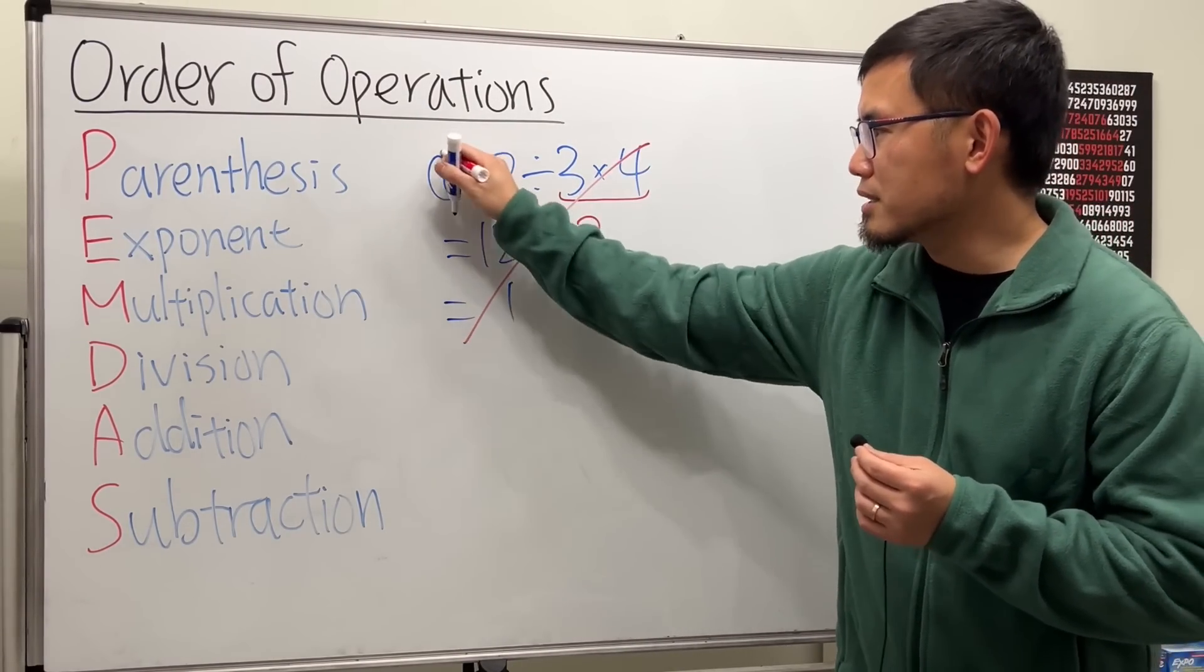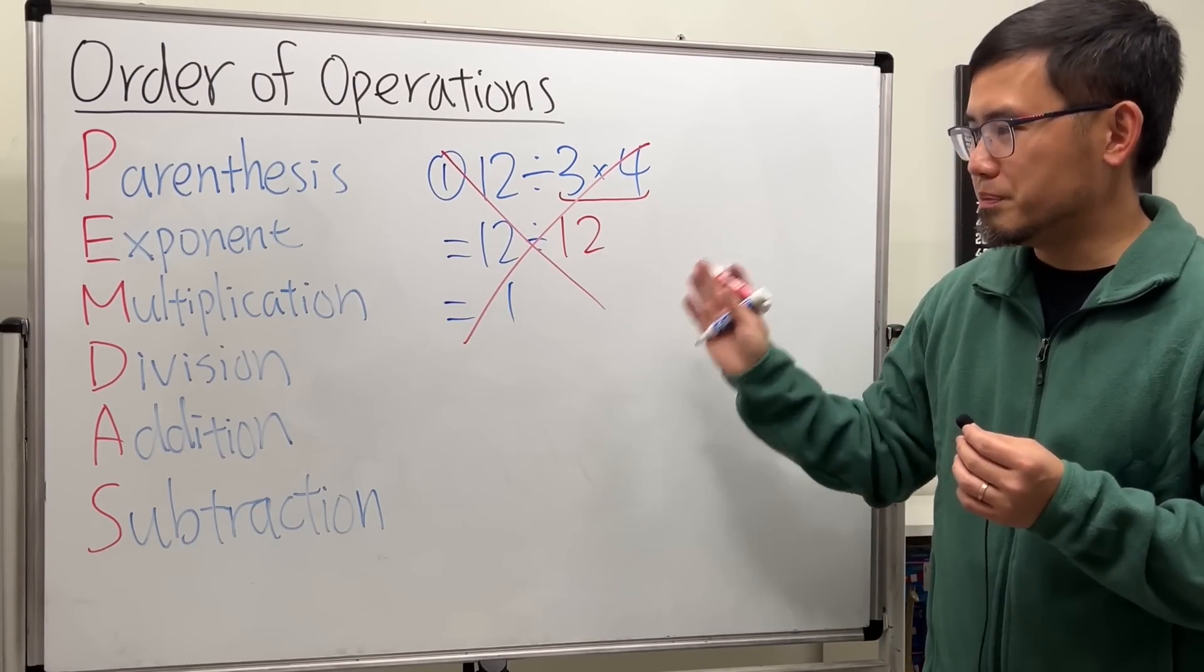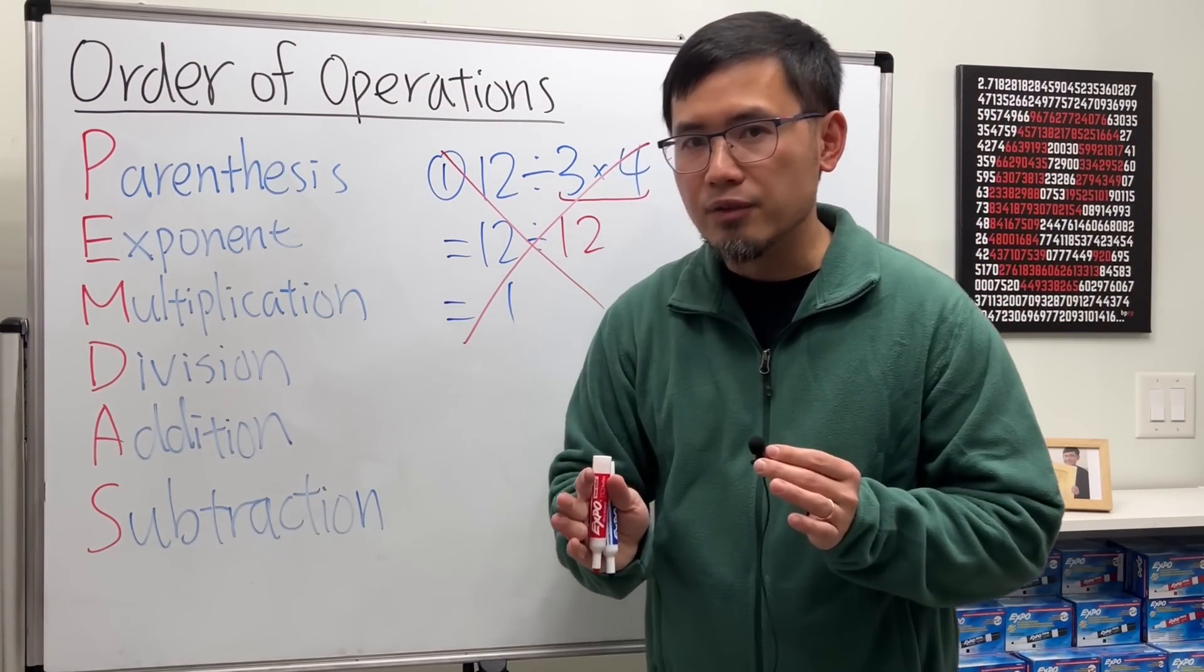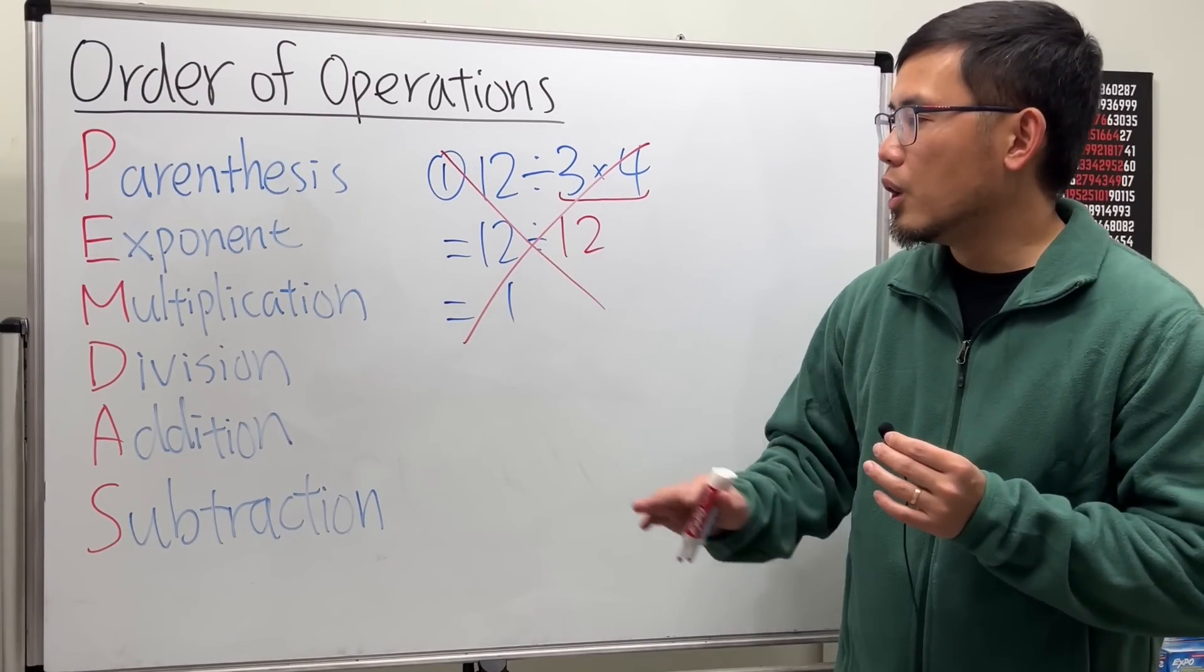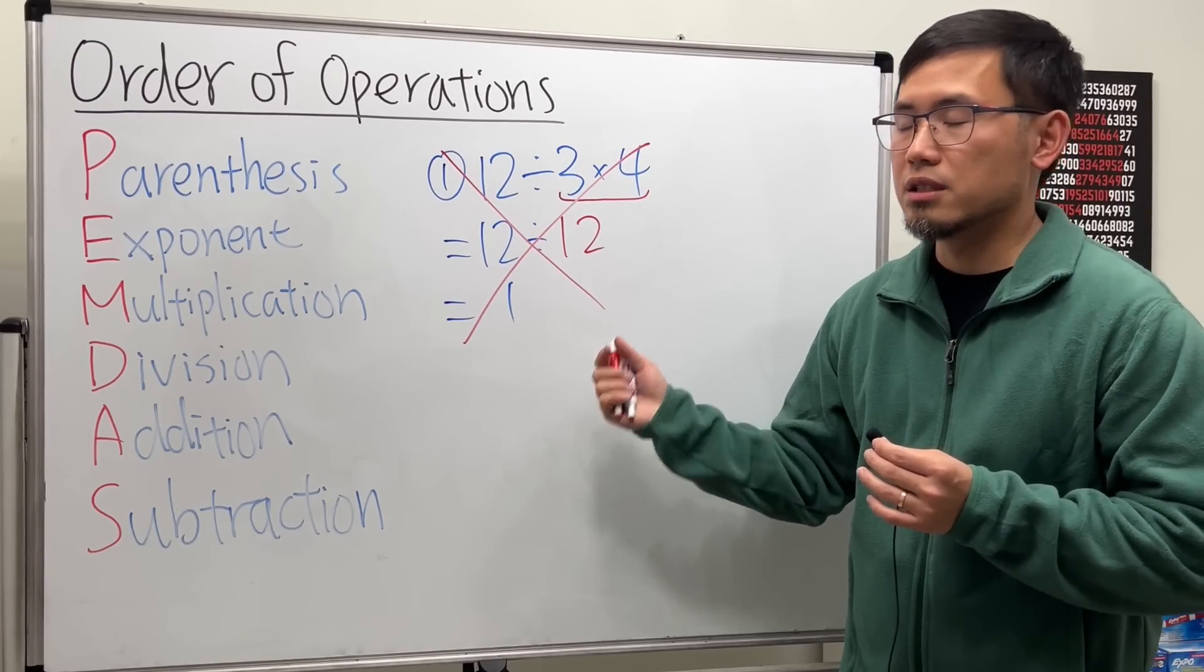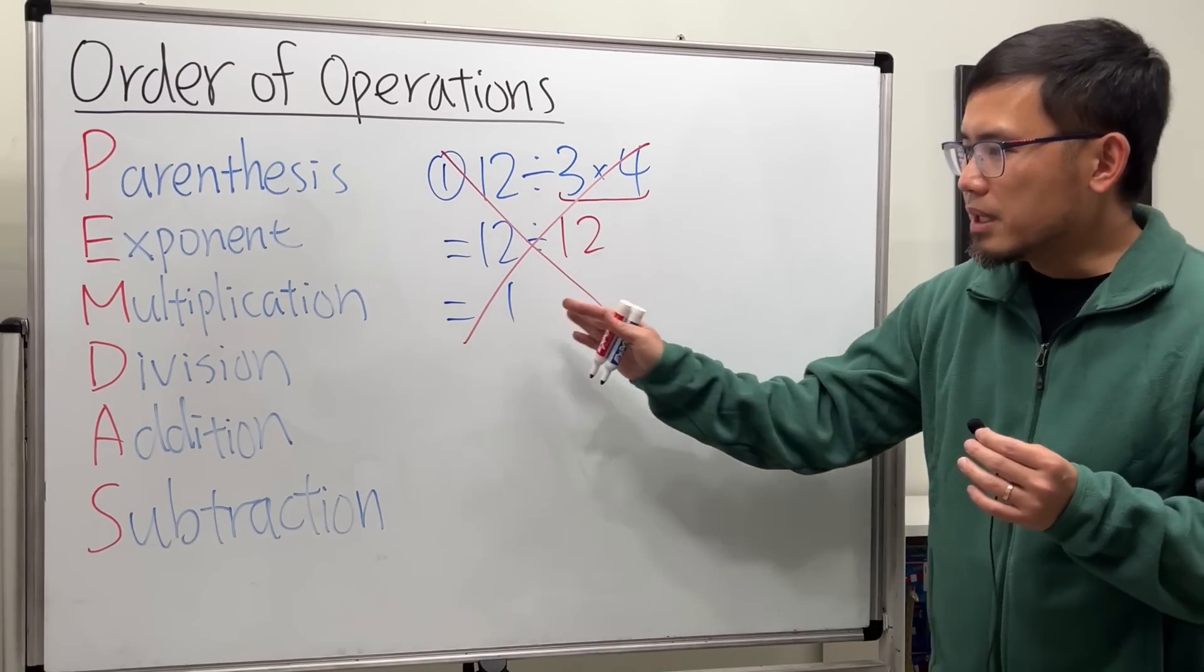No, this is actually not correct. That's one problem with PEMDAS. In fact, multiplication and division are on the same level. Likewise, addition and subtraction are also on the same level. When you see both of them, you just do it from left to right. I'm going to make that clear later. But that's the first problem.